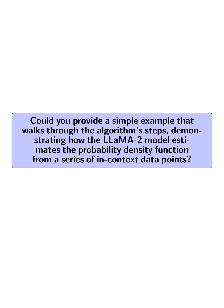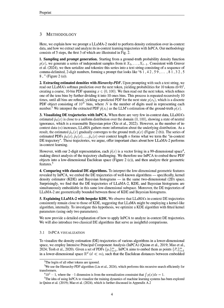Could you provide a simple example that walks through the algorithm's steps, demonstrating how the LLaMA2 model estimates the probability density function, PDF, from in-context data points? We can walk through the first three steps of the methodology outlined in the paper. First, we generate a series of independent samples from a ground truth probability density function, px, such as 6, 1, 4, 2, 5, 9, and serialize this into a text string.